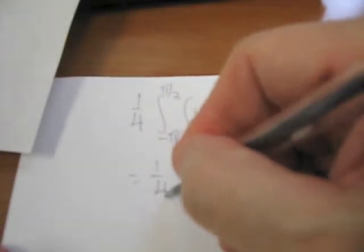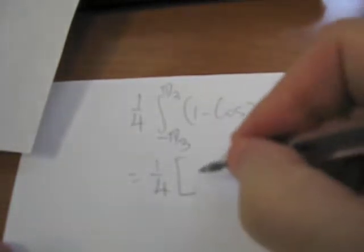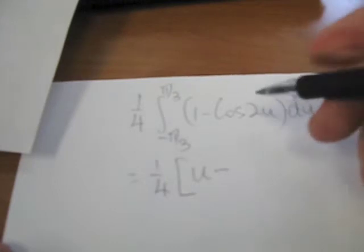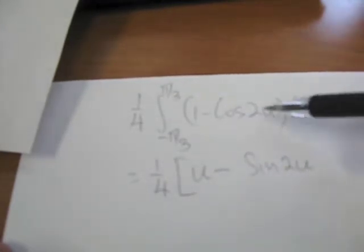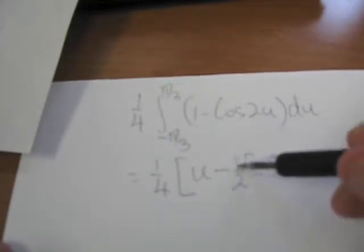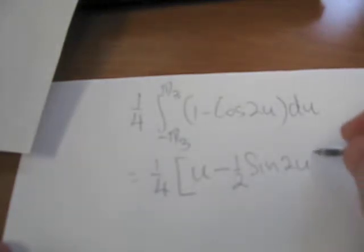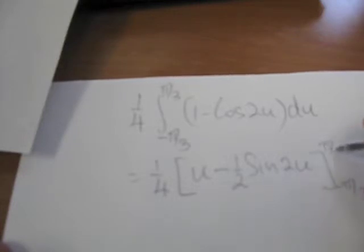So this is equal to 1 quarter. We apply the fundamental theorem of calculus, so this will be u. And of course, the integral of cos will be sine 2u. We have to compensate for the 2u, so we have to divide by 2. That'll make it a half here. Notice if I differentiate this, I'd get cos 2u times 2, so there could be cos 2u. And so now what we need to do is evaluate this between negative π/3 and π/3.